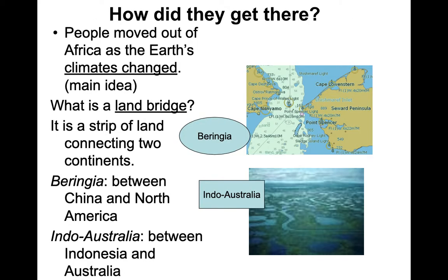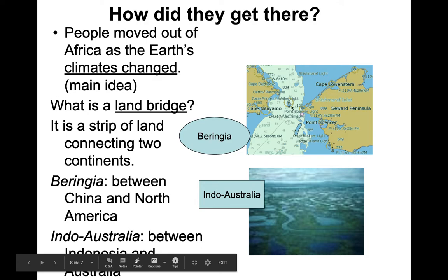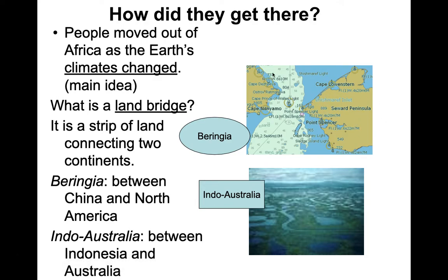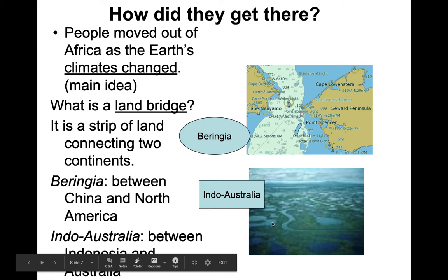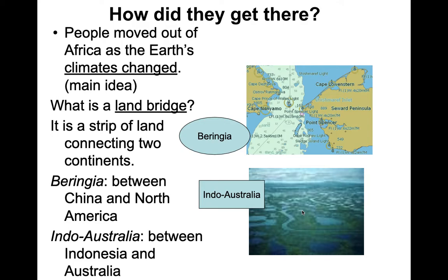How did we get to all these places? Essentially we just walked, adjusting to the climates as we went. If it got too cold, we found ways to make clothing to keep warm and moved further. We were also able to get to the Americas because of the land bridge — this map shows Alaska on one side and Siberia and Russia on the other. That area was a solid mass of ice and land known as Beringia. Getting to Australia involved pockets of dried-up land that are now underwater.